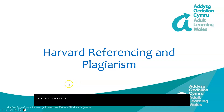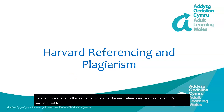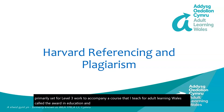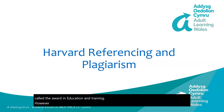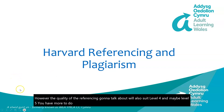Hello and welcome to this explainer video for Harvard referencing and plagiarism. It's primarily set for level three work to accompany a course called the Award in Education and Training. However, the quality of referencing we're going to talk about will also suit level four and maybe level five. You have more to do for level six and beyond, and it's always worth checking with your organisation or institution for their methods of referencing.